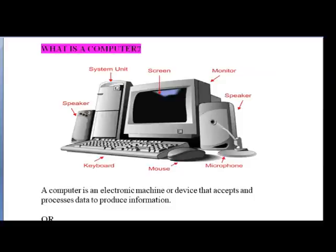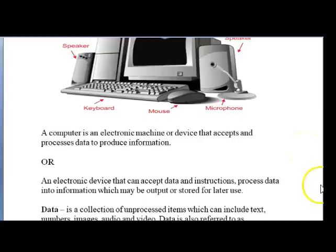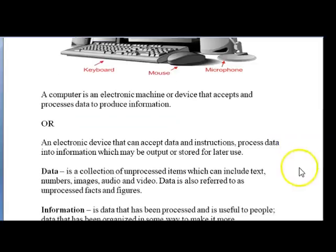Let us begin. What is a computer? I have a diagram of a computer system in front of me, which is labeled, and you can see everything there. A computer is an electronic machine or device that accepts and processes data to produce information. A better definition is that it is an electronic device that can accept data and instructions, process data into information, which may be output or stored for later use.